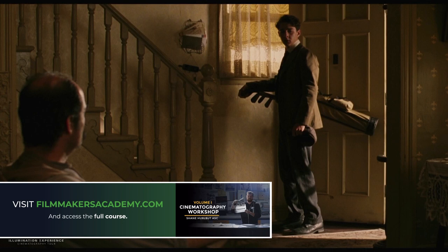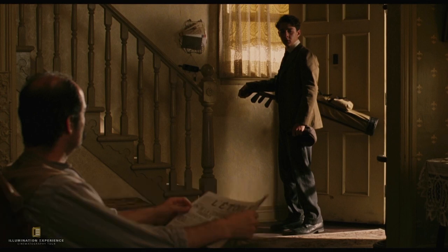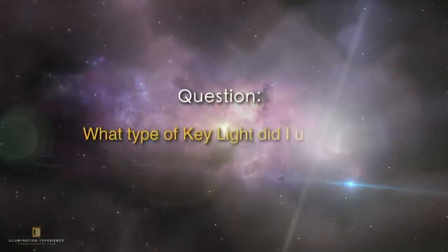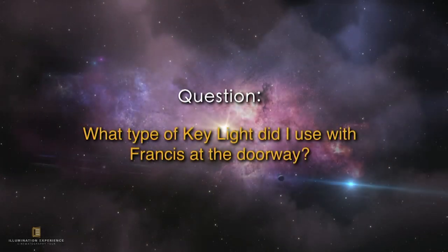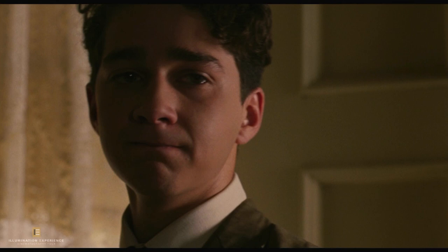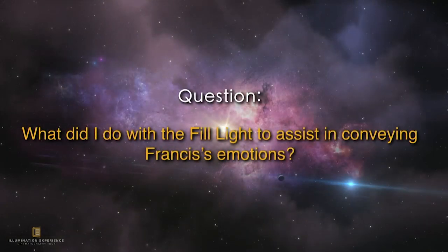At that moment he looks to his mom first and then walks up the stairs. Second question: what type of key light did I use with Francis at the doorway? Remember the five things — the reflection in the eye, the wedge, the drop shadow, the eye shadow. I've brought the light around so it's creating that eye shadow on his face to feel a little more damaged, ashamed, and understanding the weight of the situation.